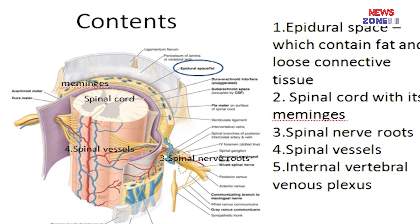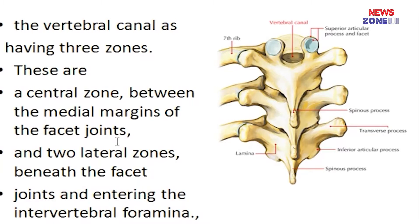For the purpose of clinical importance, the vertebral canal can be divided into three zones. One is the central zone, which lies between the medial margin of the facet joints. There are two lateral zones, which lie beneath the facet joint and can enter into the intervertebral foramen — so they can communicate with the intervertebral foramen.